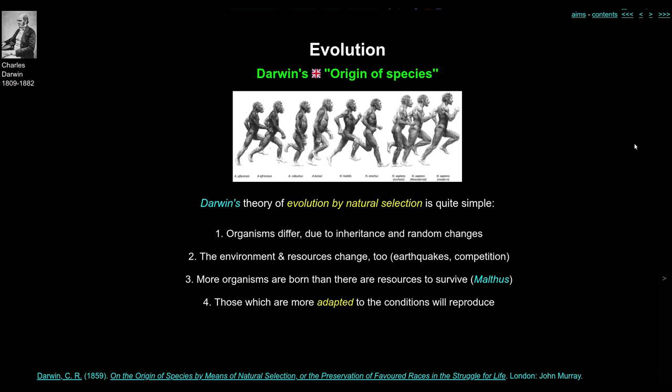The first thing he noted is that organisms differ. Animals of the same species differ from each other — this could be due to inheritance, maybe their parents are slightly different, but also from random mutations and random chances. The second important thing is that the environment and resources change as well: there could be an earthquake, a volcano, or a hurricane that fundamentally changes the environment.